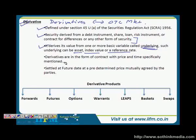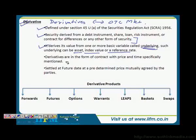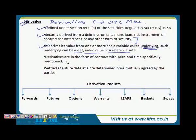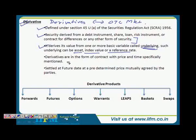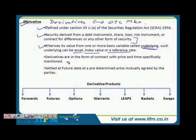How does the question come on derivatives in the exam? They ask the basic definition and in the form of an example. For example, in currency futures, what is the underlying? When we say a derivative derives its value from the underlying — in currency futures, the underlying is the exchange rate. That's the underlying.